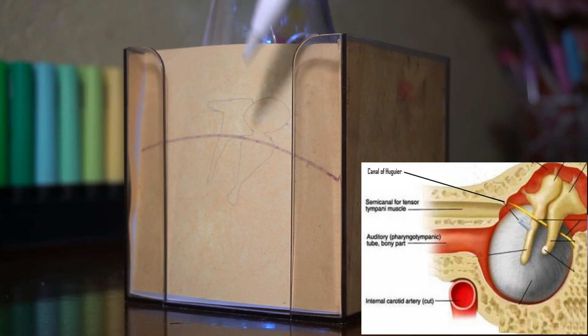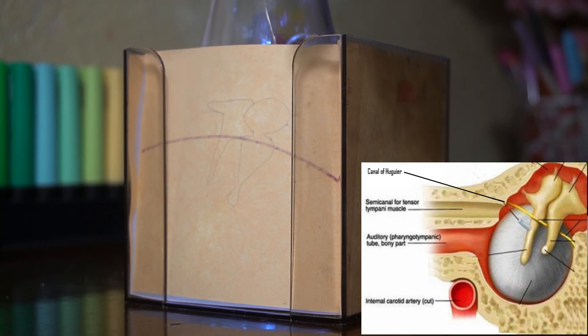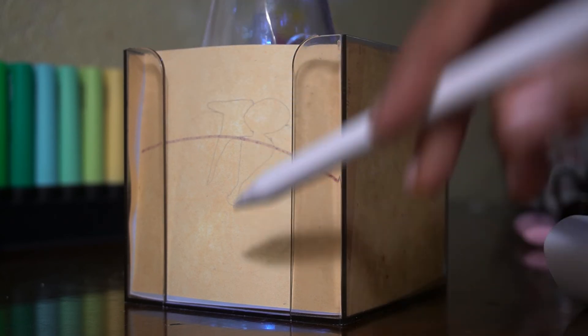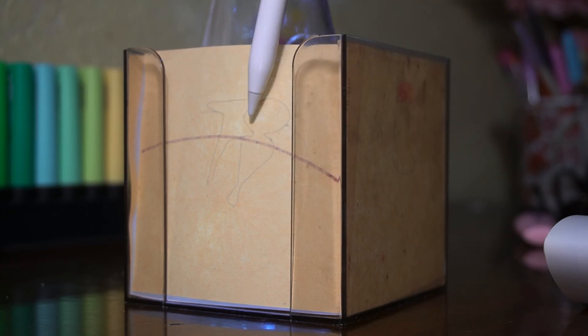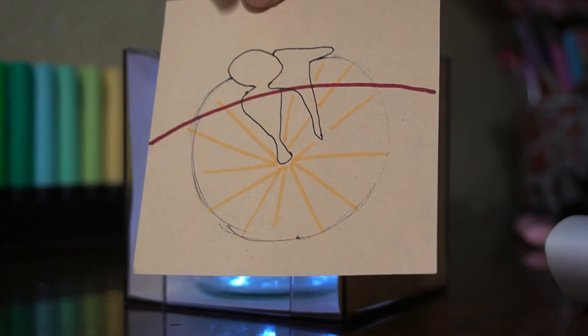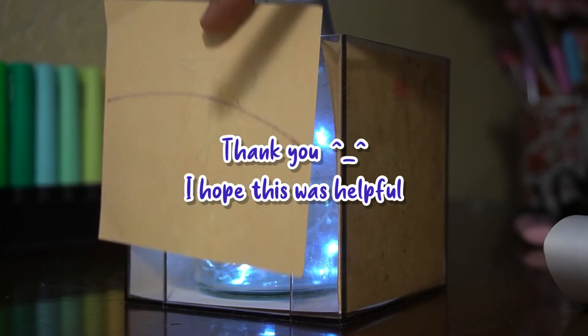The tympanic membrane is semi-transparent and forms a window into the middle ear. It is possible to see some structures of the middle ear through the normal tympanic membrane—for example, the long process of the incus, the incudostapedial joint, and the round window to some extent, and maybe even the chorda tympani. This is what the lateral wall looks like.